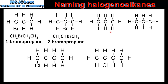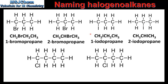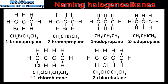Next we look at the two examples on the right which both have 3 carbon atoms in the longest chain. The molecule on the left has an iodine atom bonded to carbon number 1 and the molecule on the right has an iodine atom bonded to carbon number 2, so these compounds are named 1-iodopropane and 2-iodopropane. The next two compounds have 4 carbon atoms; they are named 1-chlorobutane and 2-chlorobutane.